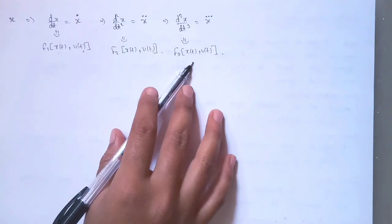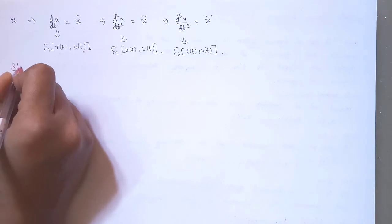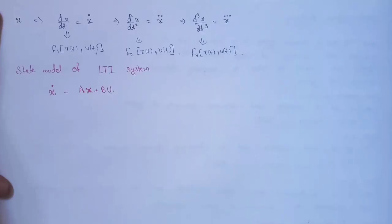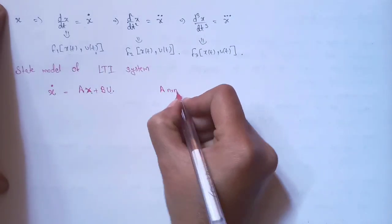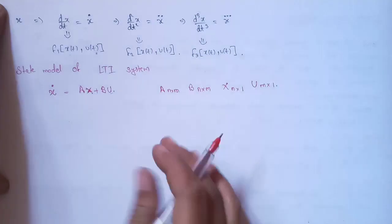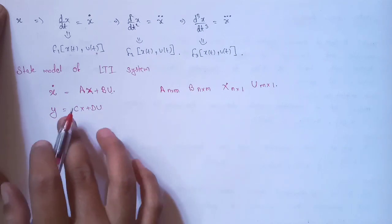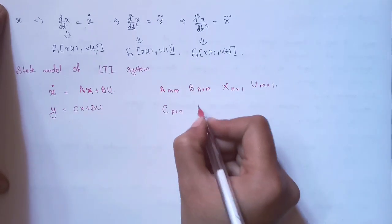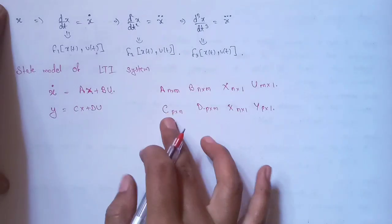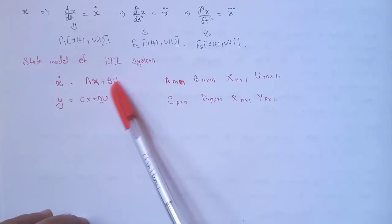One important point is the state model of the LTI system. The first-order differential equation is written as x-dot equals Ax plus Bu, where A is an n×n matrix, B is an m×m matrix, x is an n×1 matrix, and u is an m×1 matrix. The output equation is y equals Cx plus Du, where C is a p×n matrix, D is a p×m matrix, x is n×1, and y is p×1. By solving problems, D most often comes to zero. These two equations form the state model of an LTI system and are critical for the entire chapter.